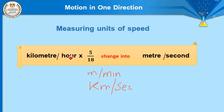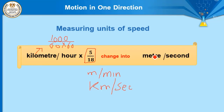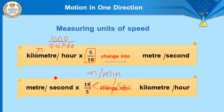How can we change from kilometer per hour to meter per second? To change from kilometer per hour to meter per second, we multiply by 5/18. Why? Because 1 kilometer equals 1,000 meters, and 1 hour contains 60 minutes, and each minute contains 60 seconds — so 1000 divided by 3600 equals 5/18. To change from meter per second to kilometer per hour, we multiply by 18/5.